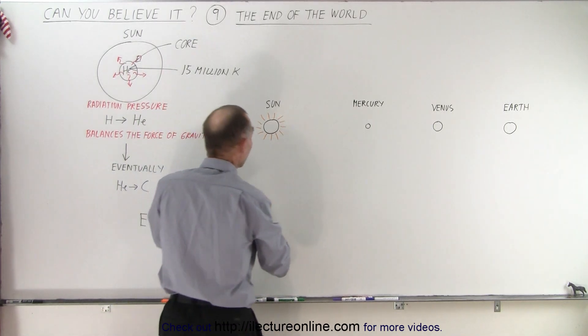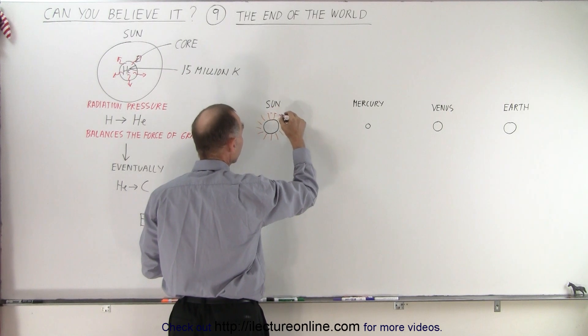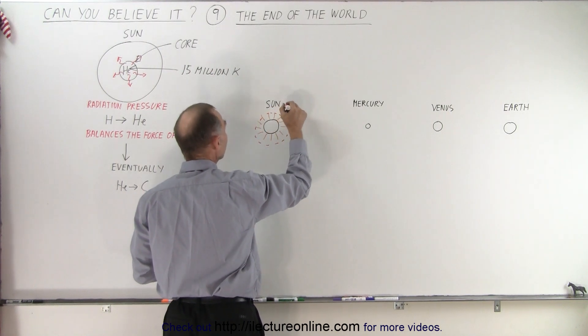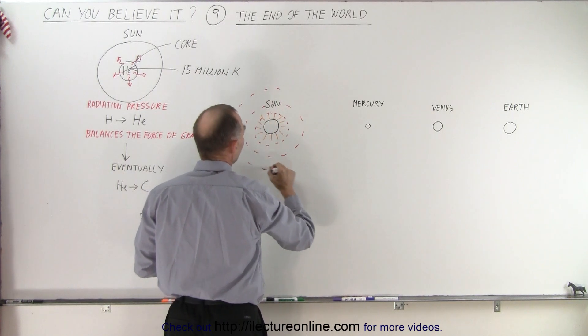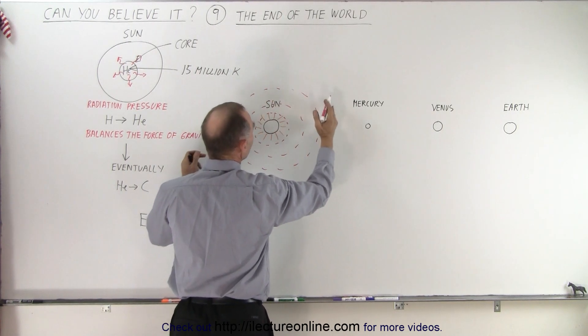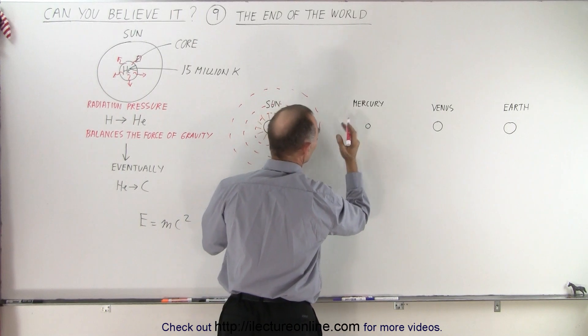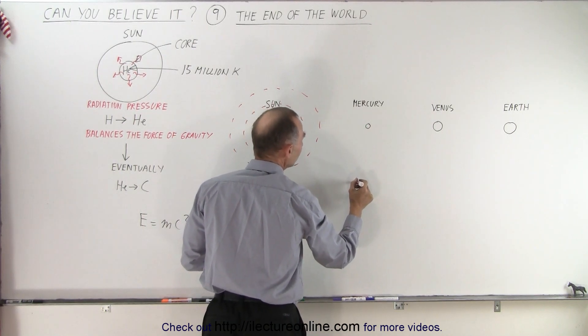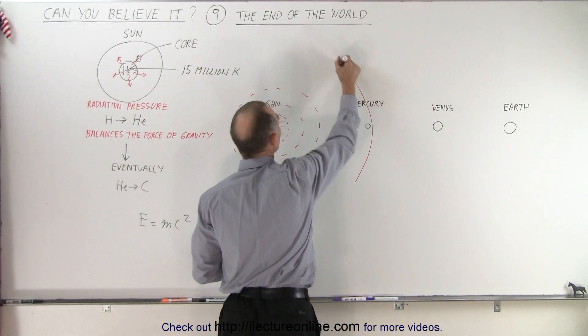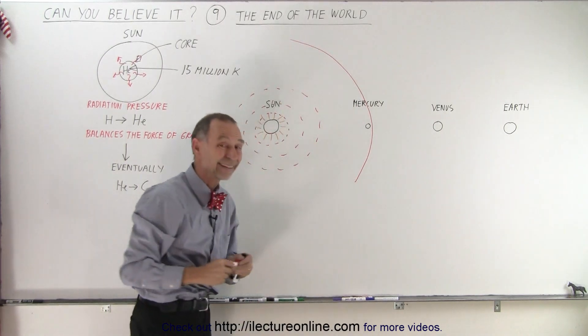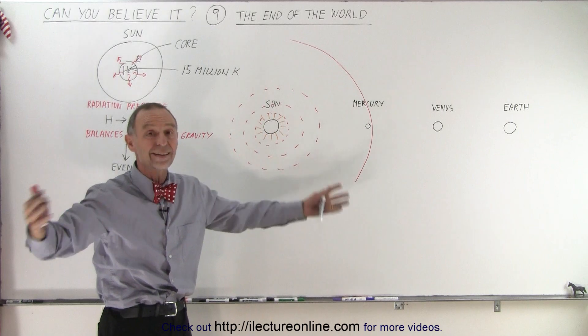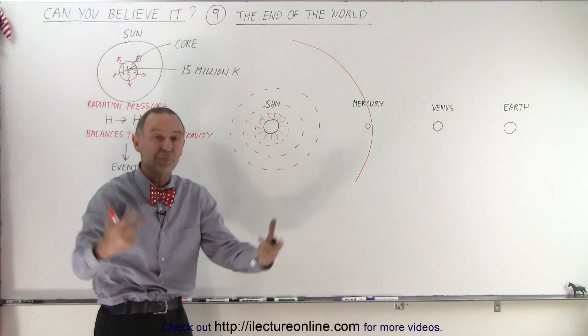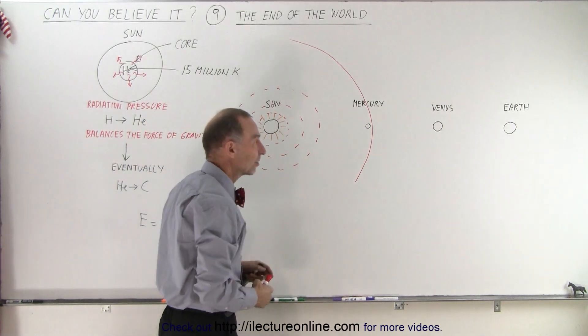But what happens when the sun turns into a red giant? Well the sun will begin to get bigger and bigger and bigger. And so the sun will expand and will expand and will expand. And as the sun gets bigger and bigger, notice what happens. It gets closer and closer to Mercury. And eventually Mercury will get swallowed up by the sun. Essentially Mercury will simply get vaporized. Mercury will cease to exist and will become a plasma vapor inside the sun.